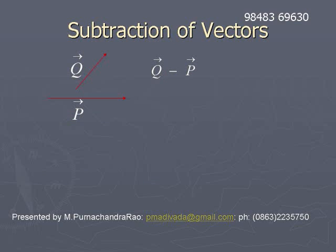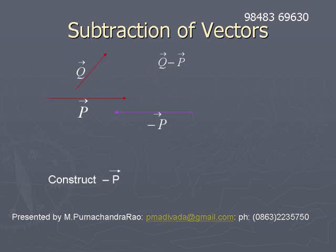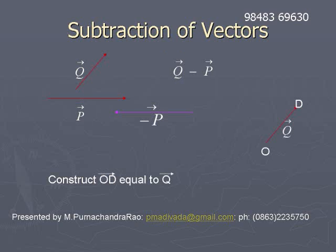Let us construct q̄ minus p̄. To construct q̄ minus p̄, first let us construct minus p̄, as shown in the middle of this slide. Then construct q̄. q̄ is constructed as OD.